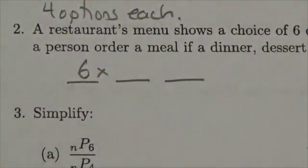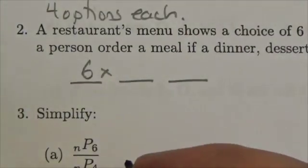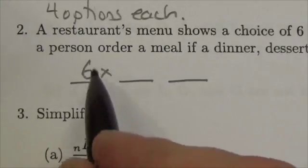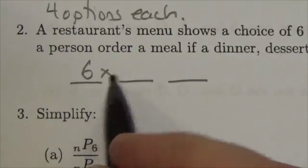I'm not trying to permute the dinners. I don't want them all in different orders, I just want one. So the number by itself represents a single choice out of six options.